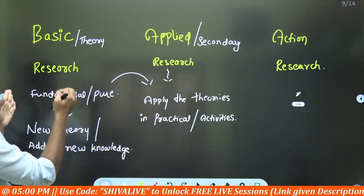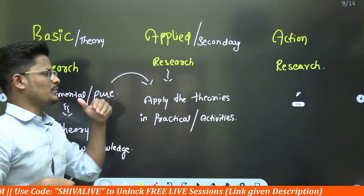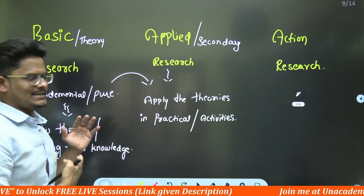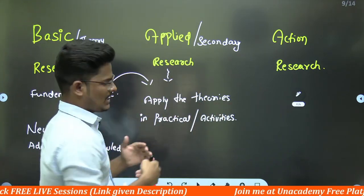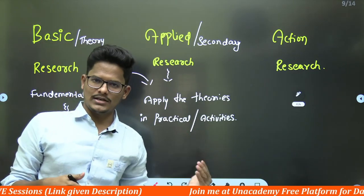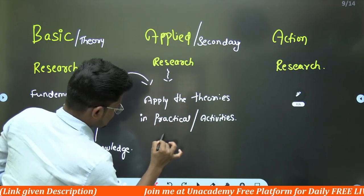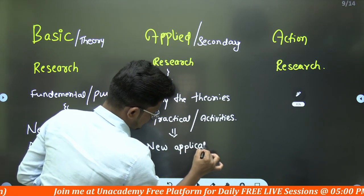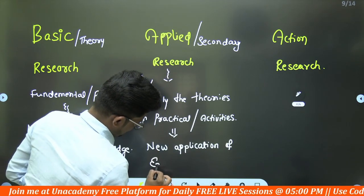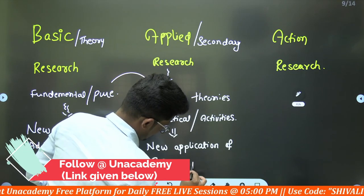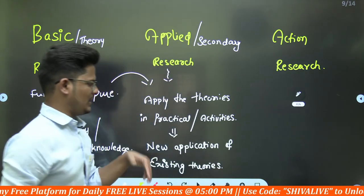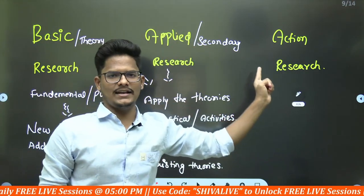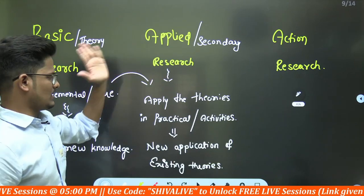Whenever you apply the theories invented in basic research in a practical way — for example, Newton's law is a theoretical research, but Newton's laws can be applied to other research problems as well. That application of theories in a practical way, or giving new applications of existing theories, is called applied research. This is also called secondary research. Both applying old theories as-is or finding new applications are considered applied research.